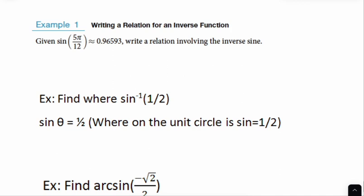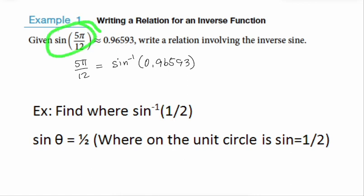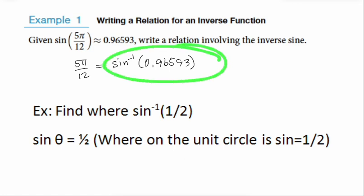Example 1 says: write a relation involving the inverse sine function. The angle measure is equal to the inverse sine of the ratio 0.96593. So if you have a sine on your angle measure and you want to take it off, you put an inverse sine on the other side.